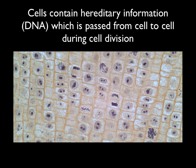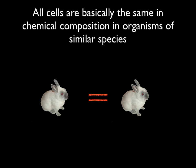Cells also contain hereditary information, called DNA, which is passed from cell to cell during cell division. The cells circled here in red are in the process of dividing the copied DNA that will be used to start new cells when they divide into two. All cells are basically the same in chemical composition in organisms of the same species, meaning that if I looked at the brain cells of this bunny, they would be pretty similar in structure and composition to the brain cells of this other bunny.